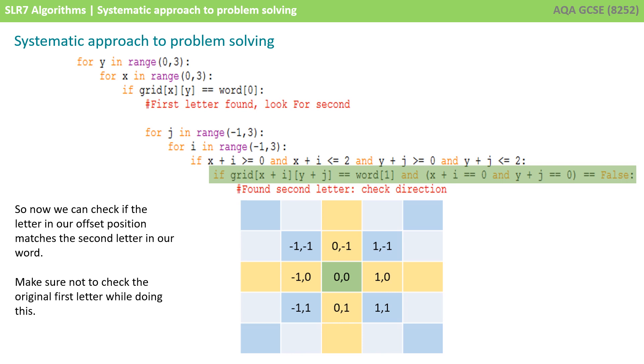So, we can now go ahead and check if the letter in the offset position matches the second letter in our word, and we need to make sure that we're not going to check the original first letter as well. So, we've got an exception to the rule, if x plus the offset and y plus the offset equals 0, then that would be the first letter, and we don't want to check that again. So, we've introduced just an extra little condition to the rule.